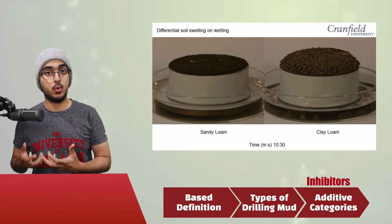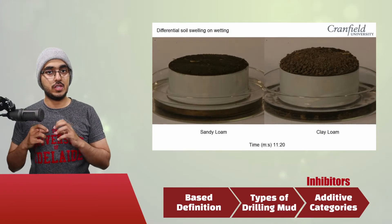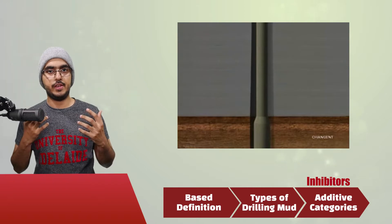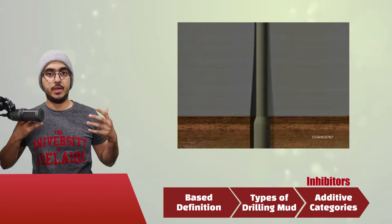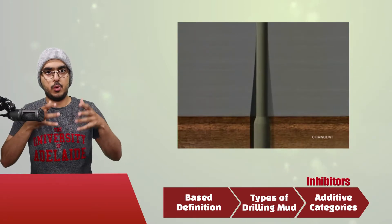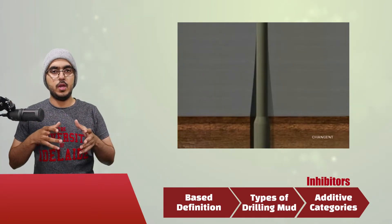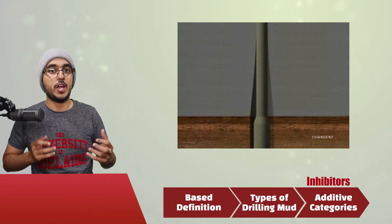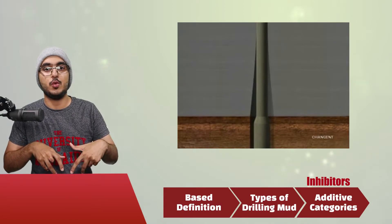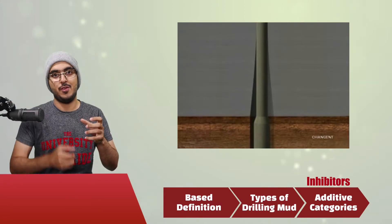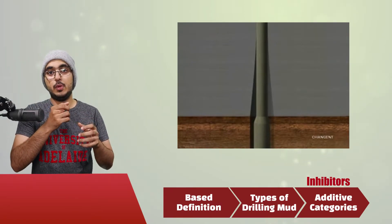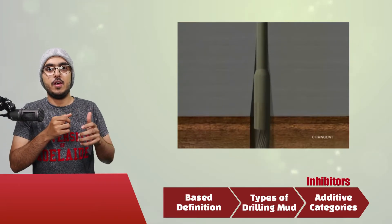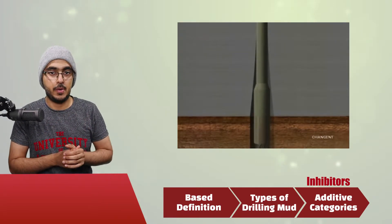On exposure to inhibitor-less liquid — just pure water — you can see that the clay expands. The easiest way for the clay to go would be into the open wellbore, and that would cause shale to fall into the wellbore, and when you try to pull out of the hole (POOH), you'll get a stuck pipe.